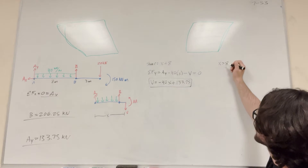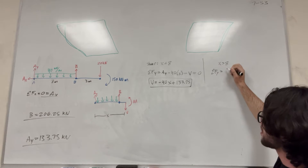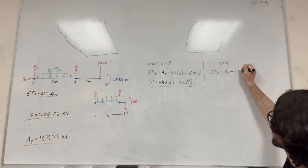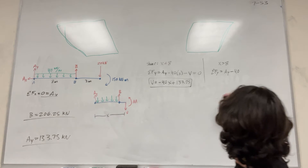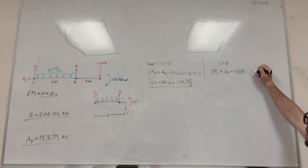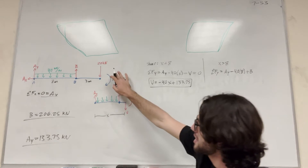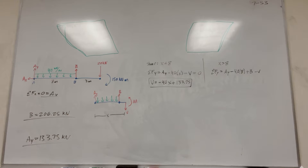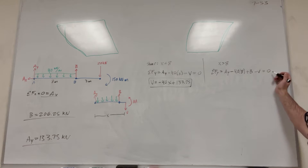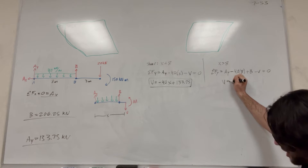Now for X greater than eight. Taking the sum of the forces in the Y direction: we still have A of Y, minus the 40 kilonewton per meter distributed load, but now we know it's over the full eight meters. Then we have B of Y pushing upward. All that's left is negative V for shear. Plugging in A of Y and B and solving, you get that V equals 20.